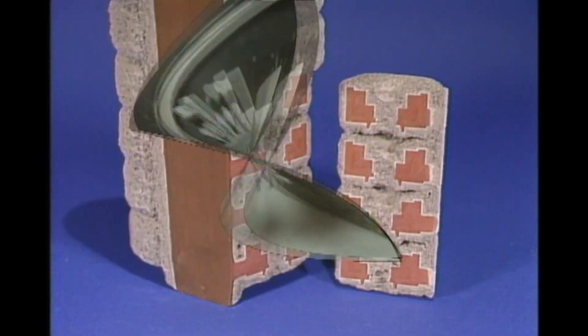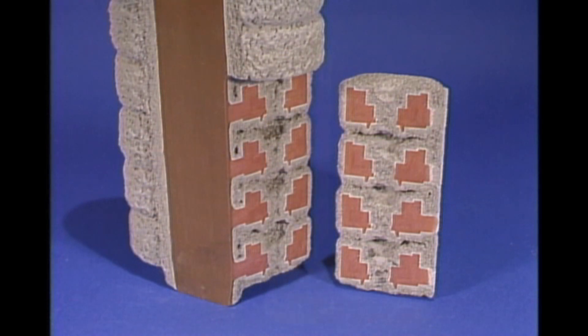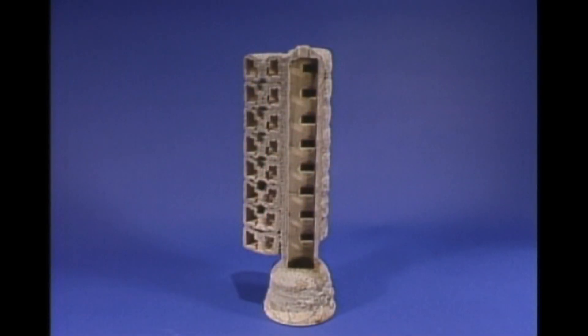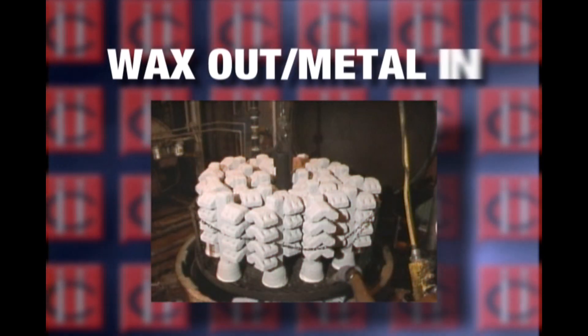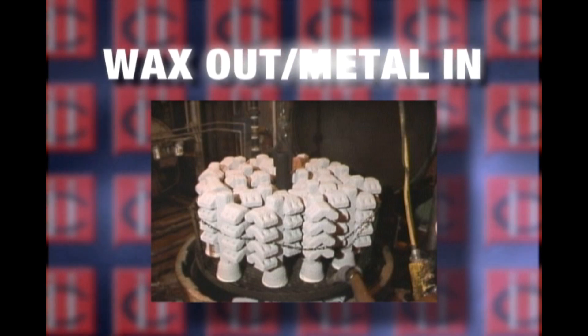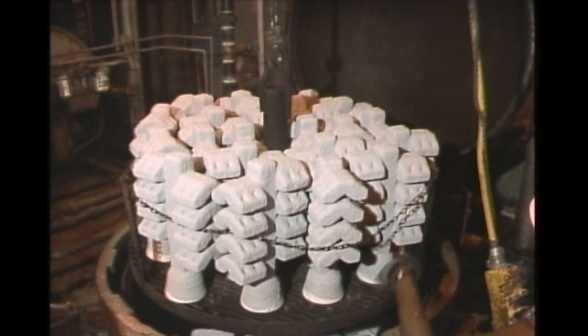If we take a typical assembly and section it, we can see how the ceramic coating faithfully follows the contours of the wax patterns. And when the wax is melted out, a precise cavity remains into which metal may be poured. The next step in the coating process is to remove the wax and fill the mold with molten metal.